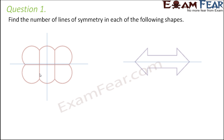Let's move on to the next image. Here also, when you look at this horizontal line, it is again a line of symmetry because anything on the top is exactly identical to anything that is there below.